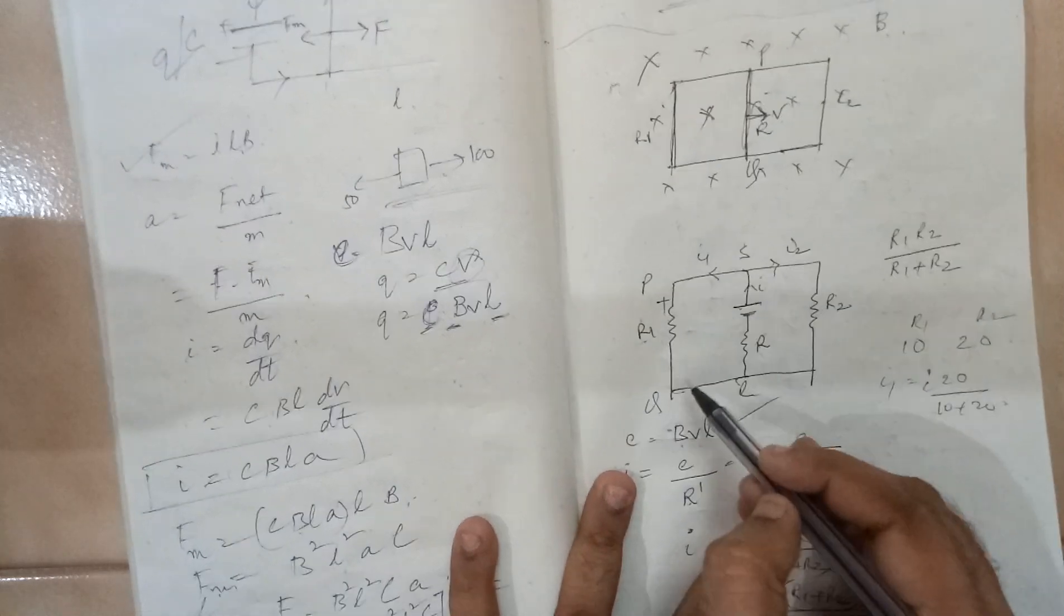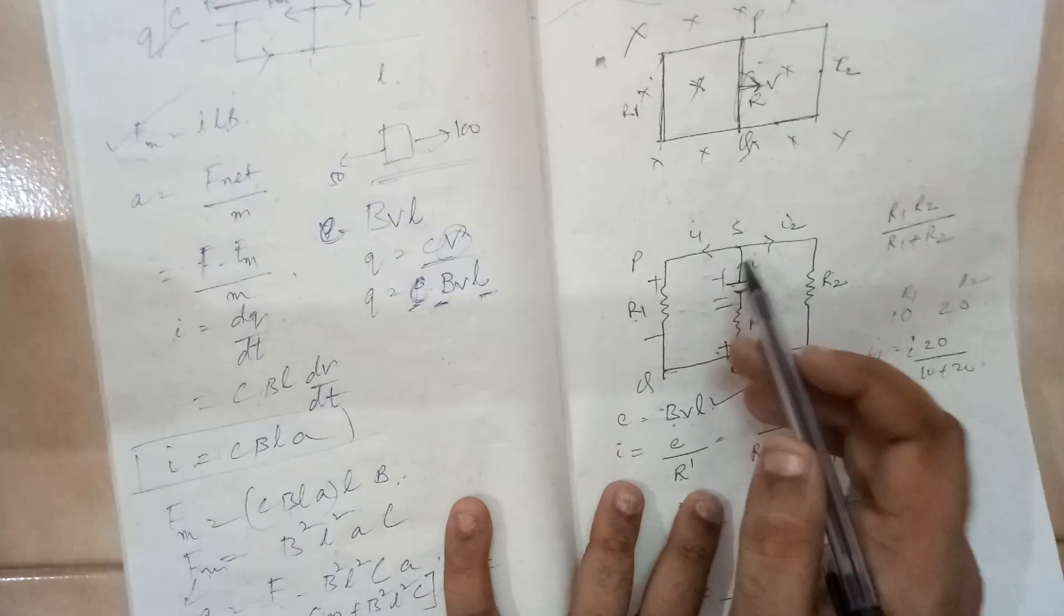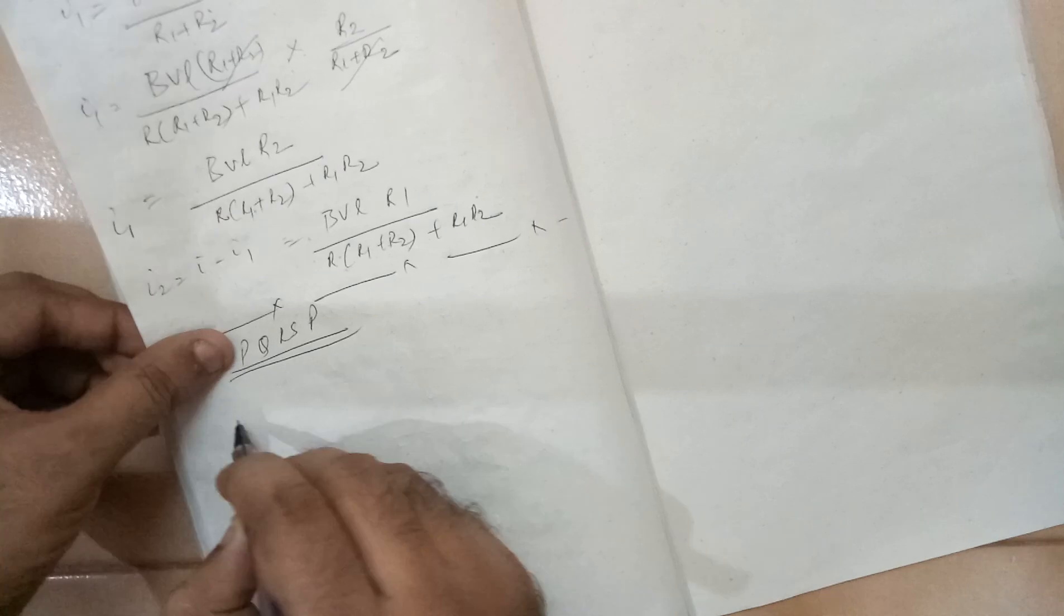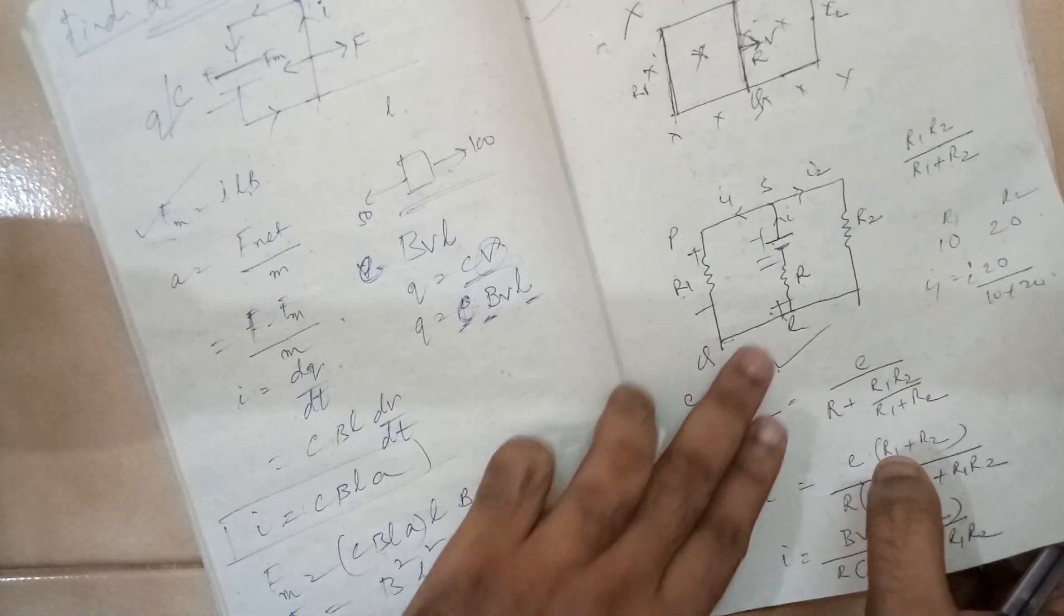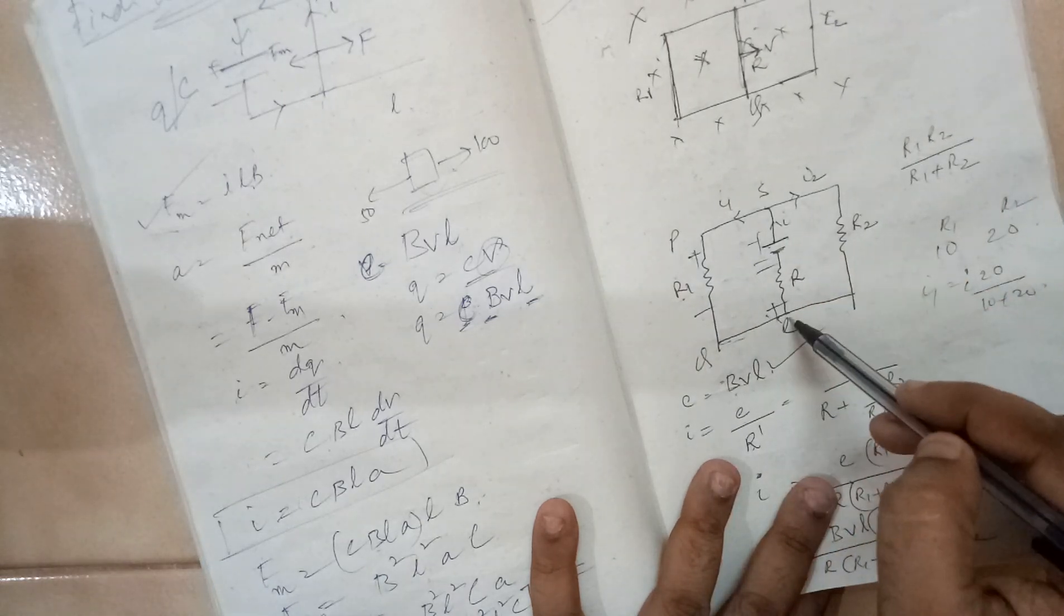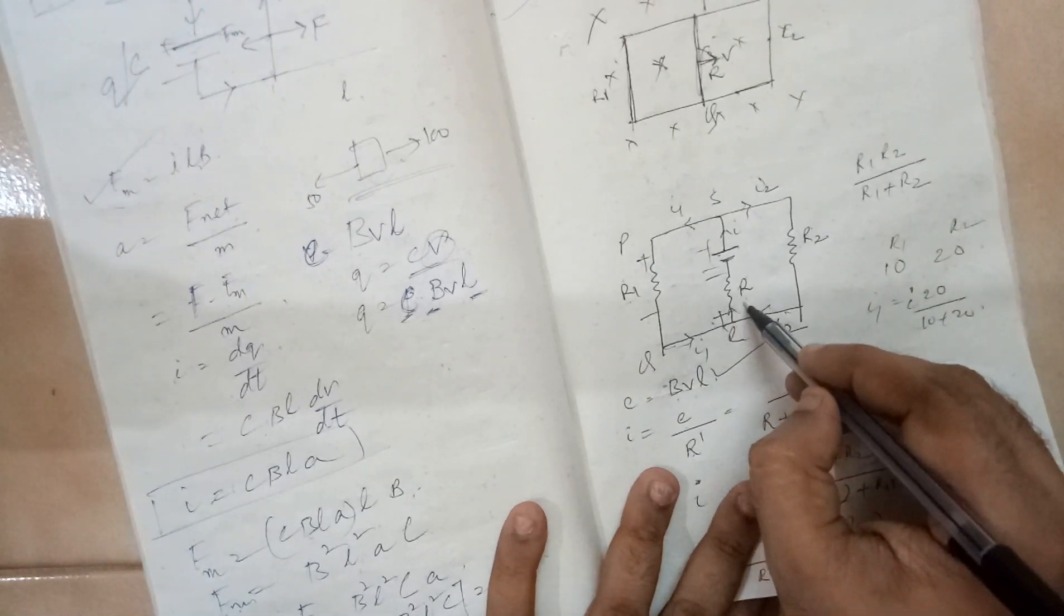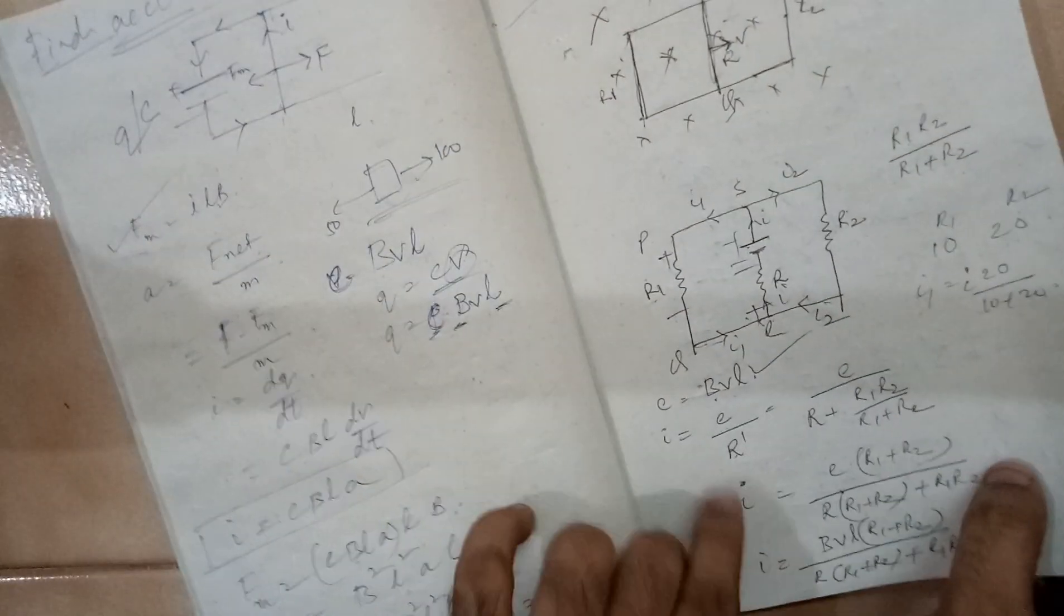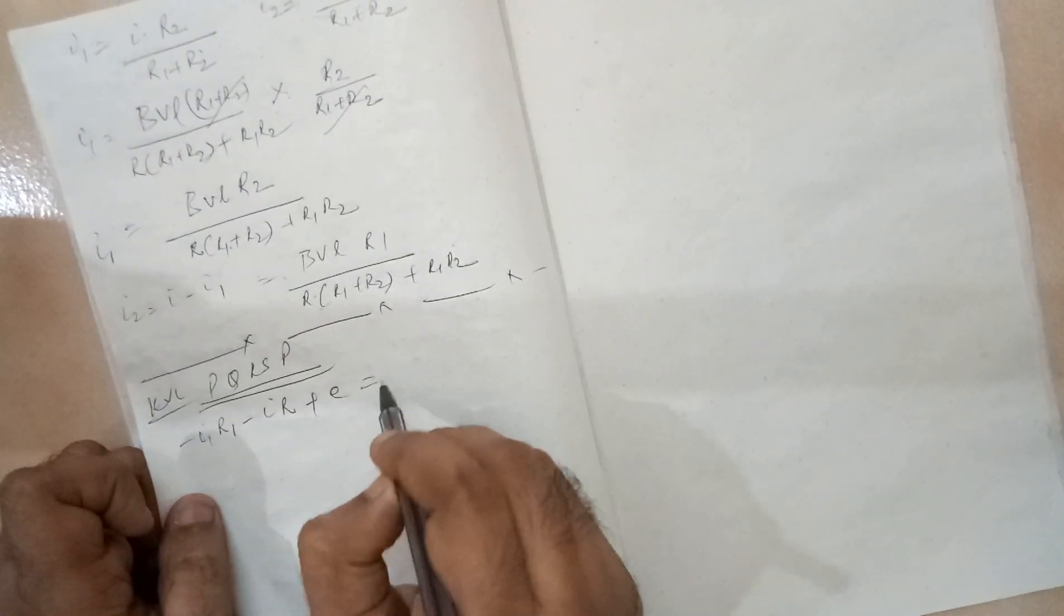The current flow is like this, so this will be my plus minus, this will be my plus minus, minus plus. So I1 into, there is a potential drop, I1 into R1 with a minus sign. Again there is a plus to minus, so here you see I1 is coming and here I2 is coming, so this is again I2 and this is again I1, so it will become again I. So minus minus, because it is plus to minus, I into R, minus to plus, so it is the EMF, it is plus E is equal to 0.